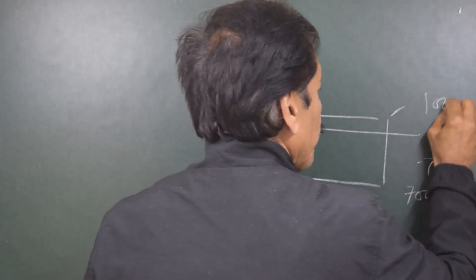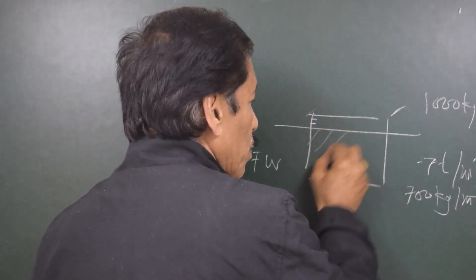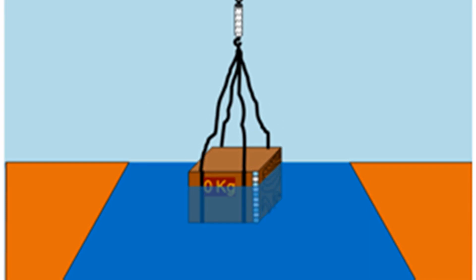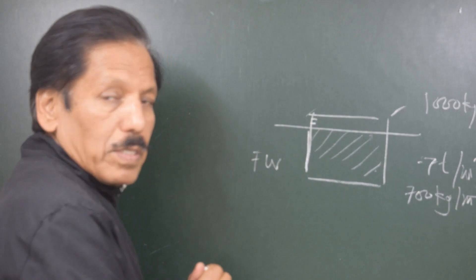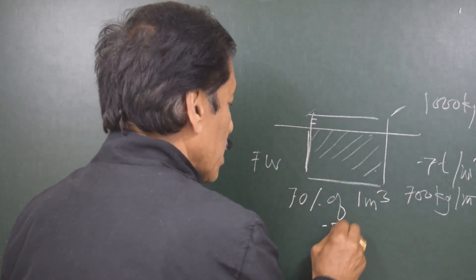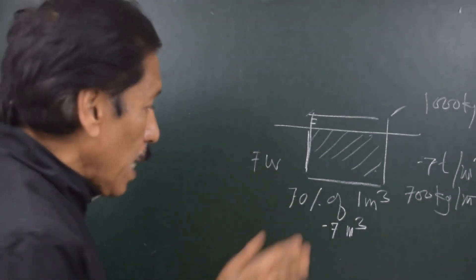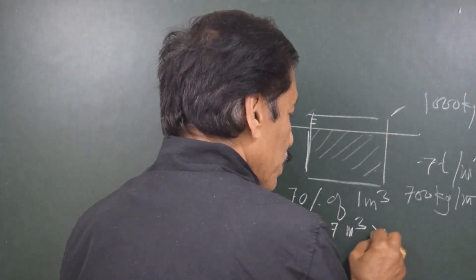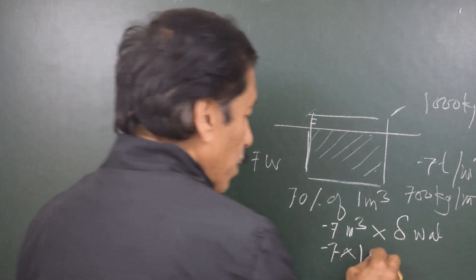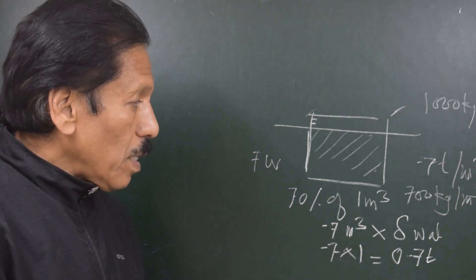Fresh water density is 1000 kg per meter cube. Whatever is the underwater volume shown by the block is the volume of water displaced while it is floating. So when the wooden block is placed in the water, the water displaced is 70% of the block volume — that means 70% of 1 meter cube, which is 0.7 meter cube. This 0.7 meter cube multiplied by density of water (0.7 × 1) gives 0.7 tons — that is the mass of the block, which means 700 kg.